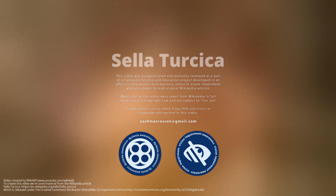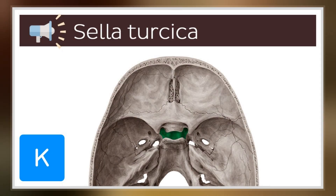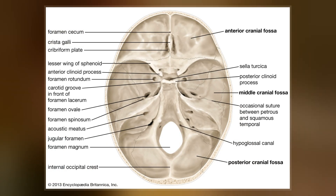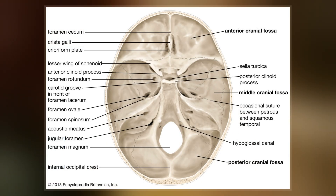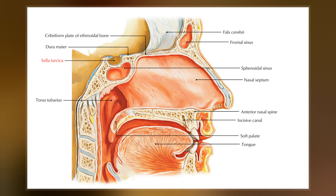The Sella turcica is a saddle-shaped depression in the body of the sphenoid bone of the human skull, and of the skulls of other hominids including chimpanzees, gorillas, and orangutans. It serves as a cephalometric landmark. The pituitary gland, or hypophysis, is located within the most inferior aspect of the Sella turcica, the hypophysal fossa.